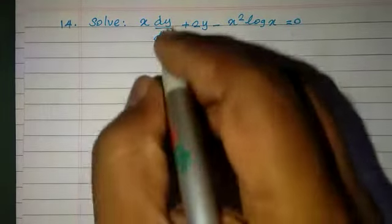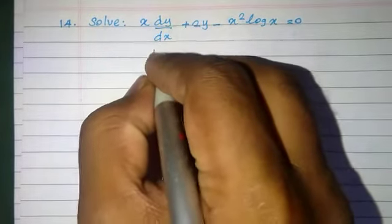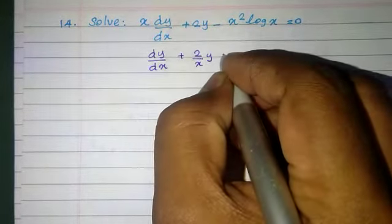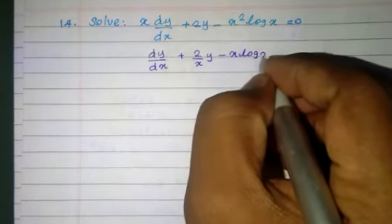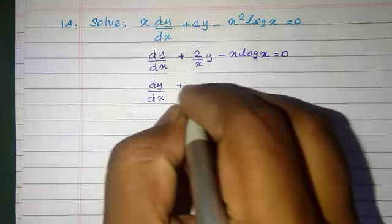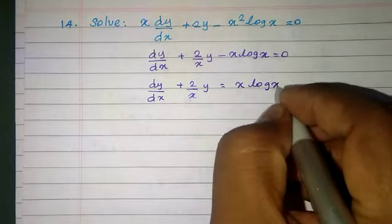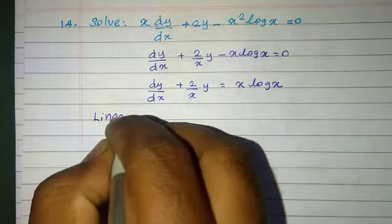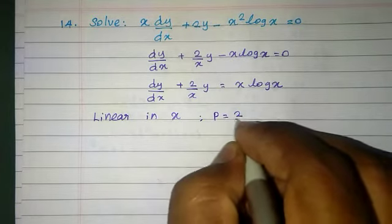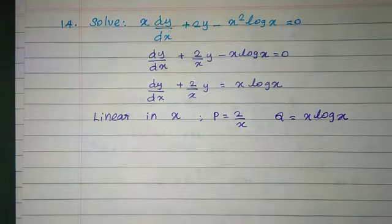Next problem: solve x into dy/dx plus 2y minus x squared log x equal to 0. Dividing by x on both sides: dy/dx plus 2/x into y equal to x into log x. So P equal to 2/x and Q equal to x into log x.